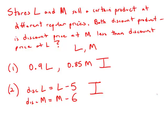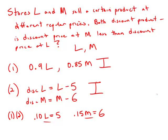Because both statements are insufficient, we will now combine the two statements. When we combine them, we find that the discounted price of L is 10% less than the regular price, and that 10% of L equals a $5 deduction — so we can solve for L. Similarly, a 15% deduction from M results in a $6 deduction, so we can solve for M. Putting all the information together, we can find the discounted prices and determine which is less. With both statements combined, we have sufficient information to answer the question, and the answer is C.